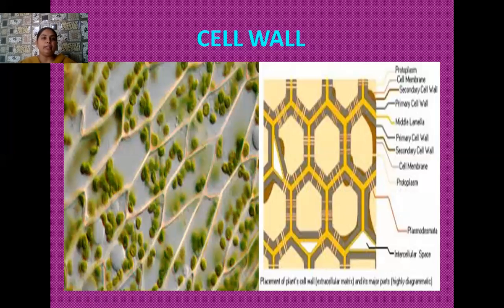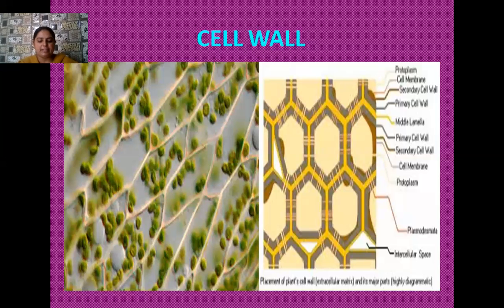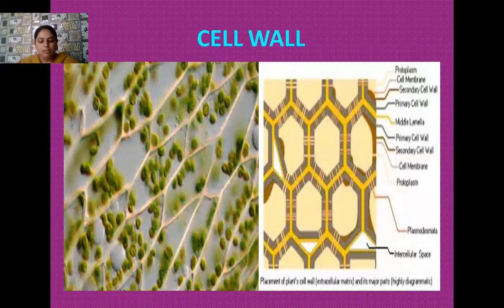In case of fungi, the cell wall is made up of chitin, which is a complex type of carbohydrate. In case of algae, many other constituents of the cell wall are present — these may be cellulose, mannose, galactans, and other types of minerals such as calcium. This is all about the cell wall.